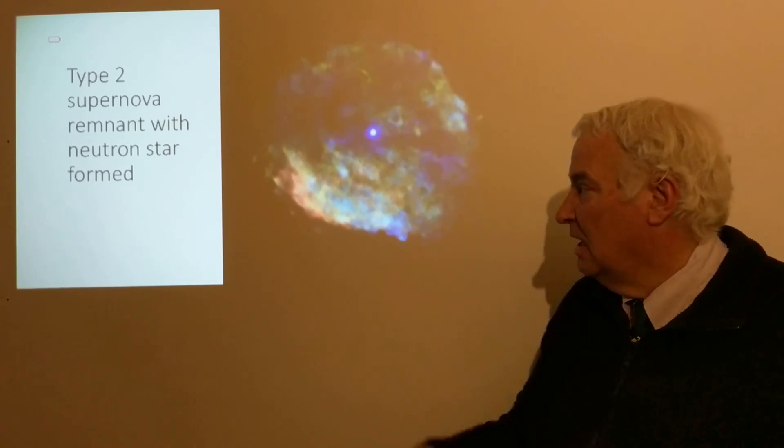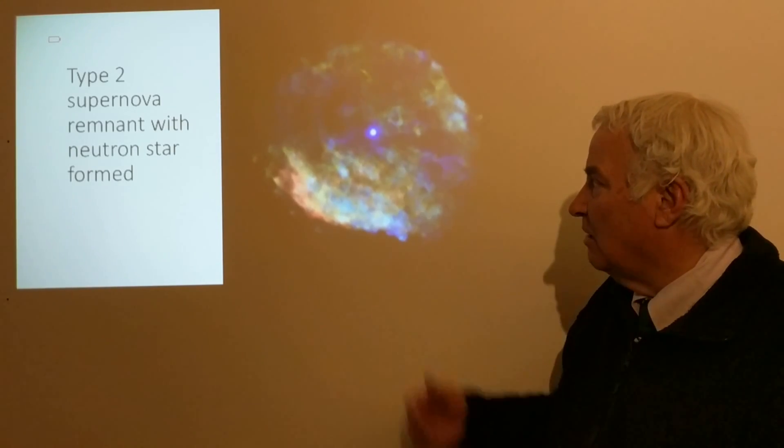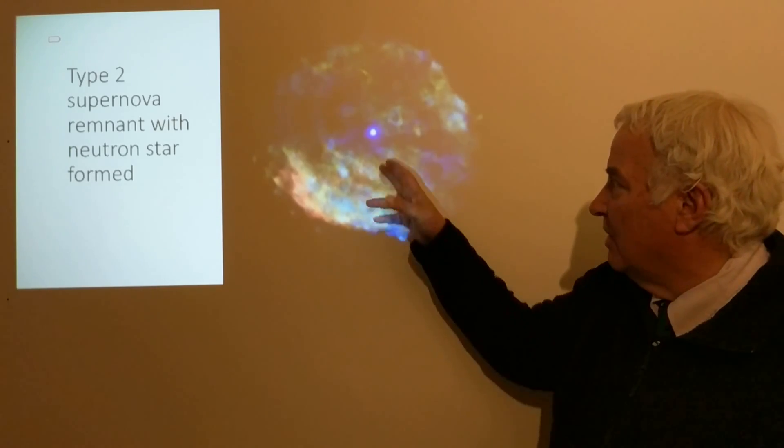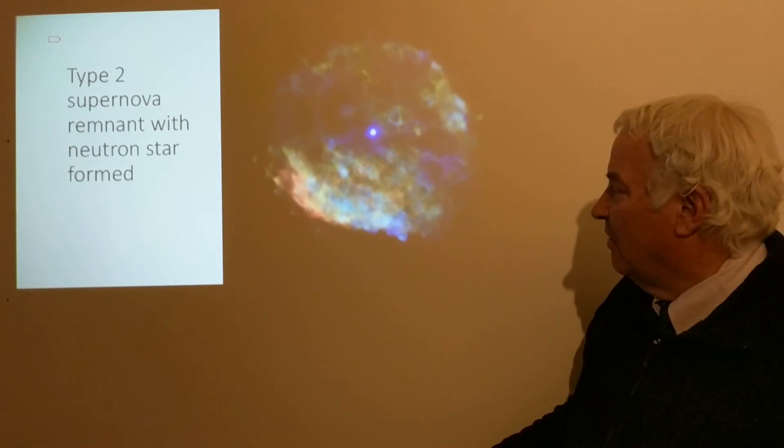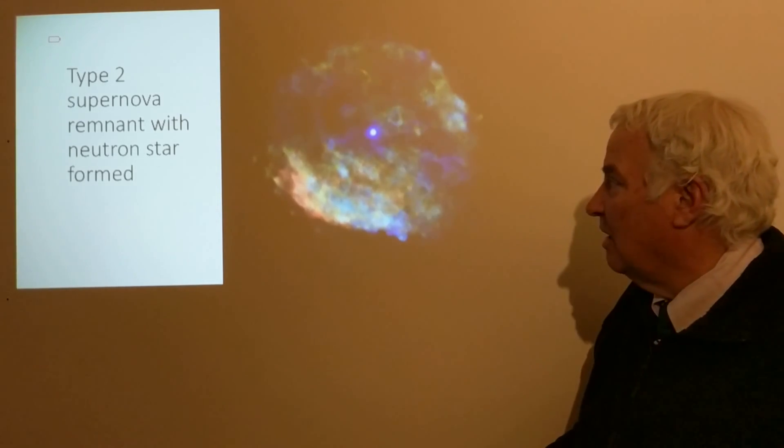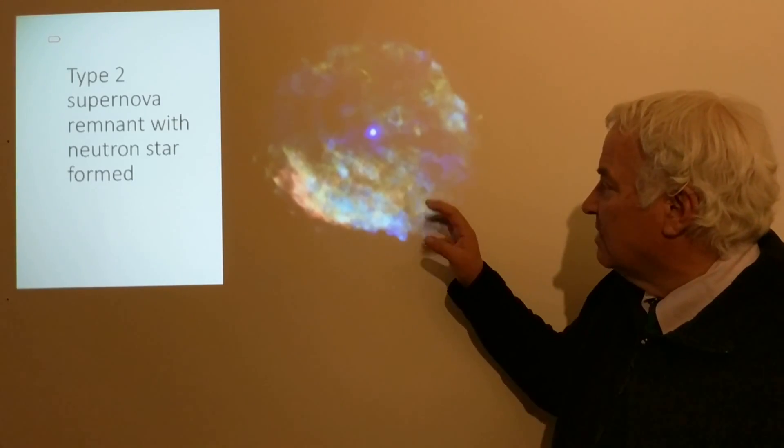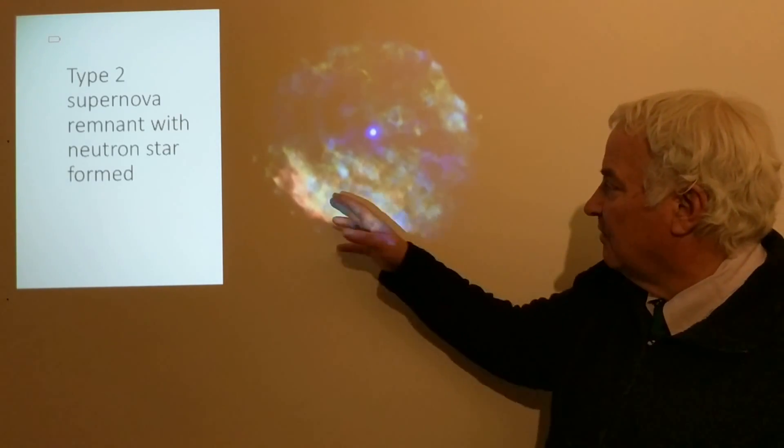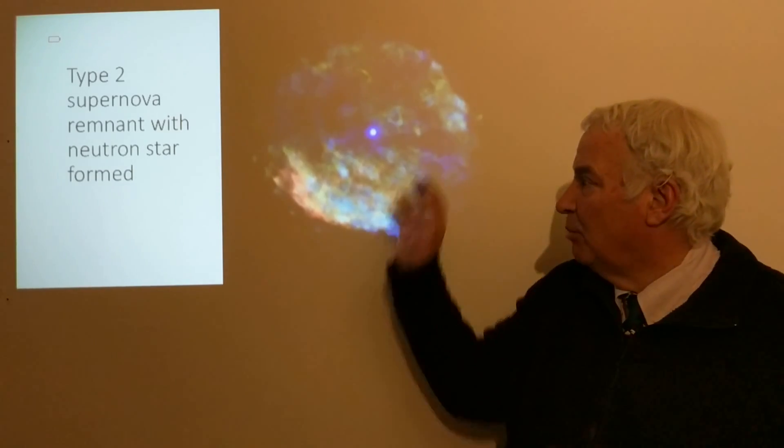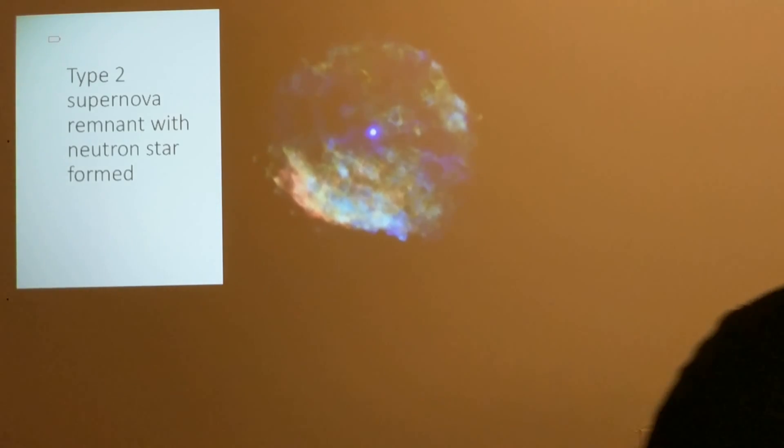So first, neutron stars. Here is a type 2 supernova remnant. It's about 2,000 years old and we know that there's a neutron star there because we can see it. A black hole would not be seen if it had been formed in this event. After 2,000 years the material is flowing away, but the neutron star still remains bright because it's still very hot.